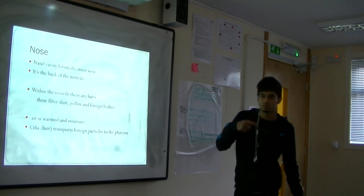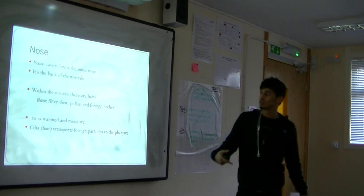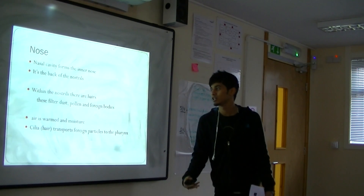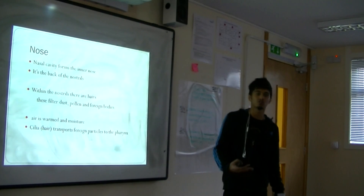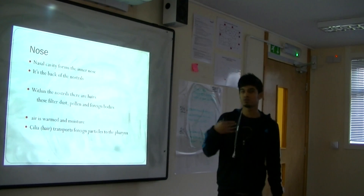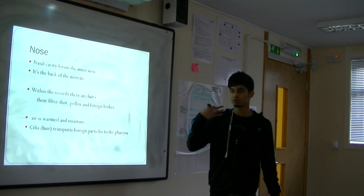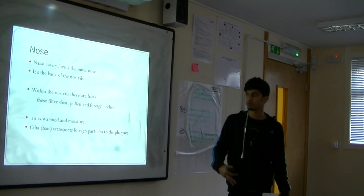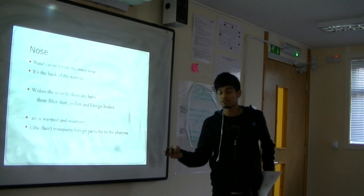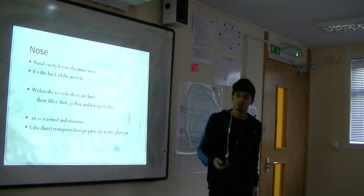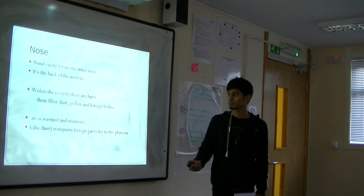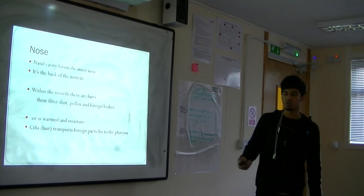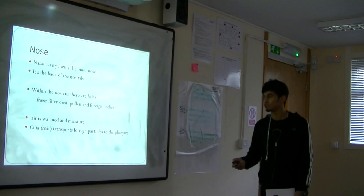The nasal cavity forms the inner side of the nose. Within the nostrils are hairs called cilia. These filter dust and particles upward towards the top of the nose, which we can then expel. It filters pollen, dust, and foreign bodies. Within our nose, the air is also warmed and moistened.